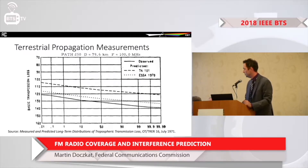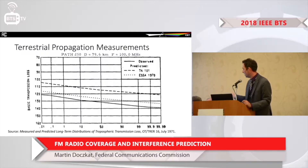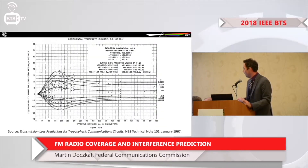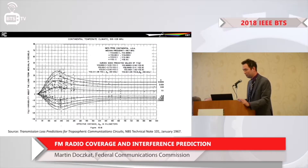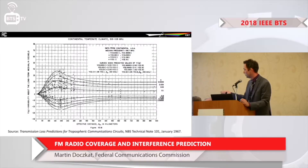Here's an example: long-term measurements done in the FM frequency band are shown, with propagation statistics spanning from 0.01% to 99.9% of the time. These measurements are based on a 1971 report and come from NBS Tech Note 101, published in 1967. The important thing here is that in the 10th to 90th percentile range, statistics can vary from the median by as much as plus or minus 10 dB depending on the path.